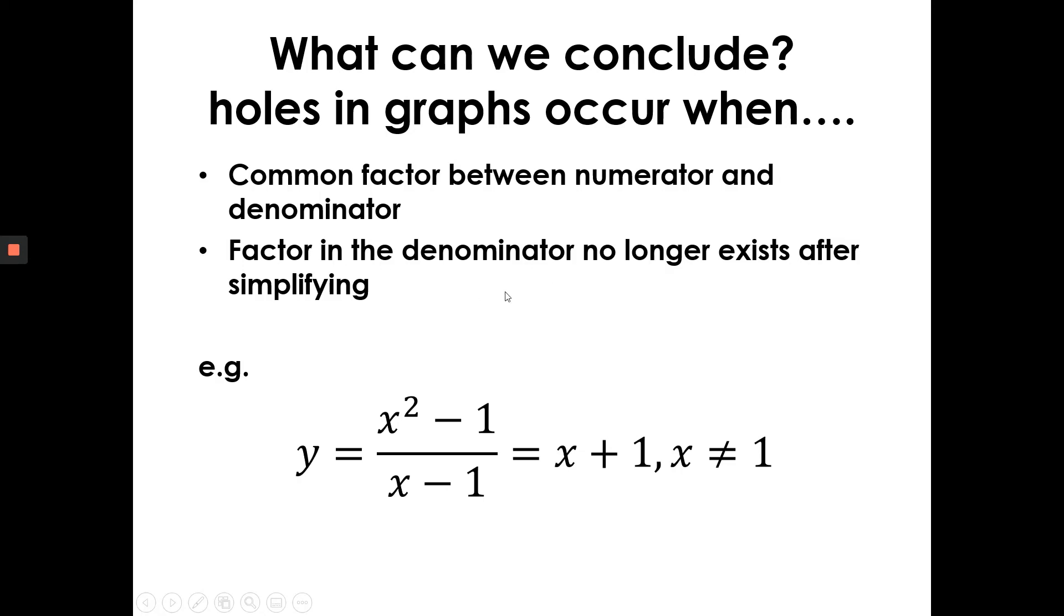So this second bullet might be a little confusing because you might be thinking, whenever there's a common factor, there's going to be a hole. But that's not always the case, actually. I can create a scenario where there is a common factor and there's actually no hole in the graph. So I'll show you those examples later on.